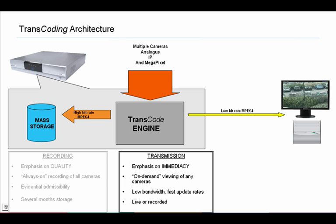In that case, what we would need to do is take the images from our mass storage device as high bitrate MPEG-4, and transcode those down to a low bitrate MPEG-4 to make sure that we maintain the speed of update and fluidity of movement, both for live or for playback.